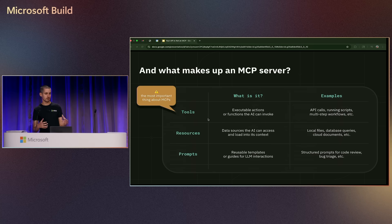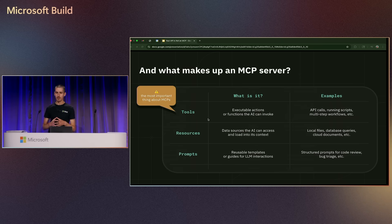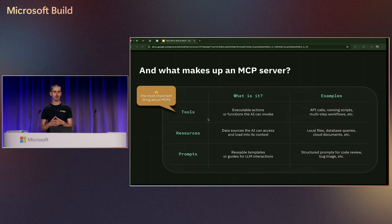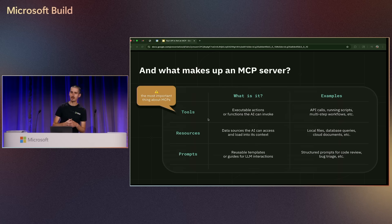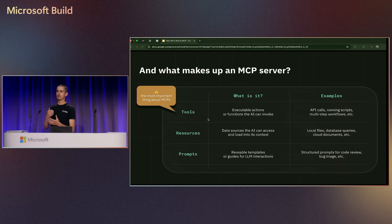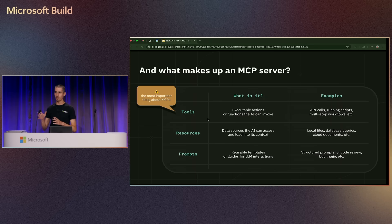The most important of these by far are tools. You can think of them as actions — things that the LLM might want to perform. An example would be if you're building an e-commerce website, a tool to buy an item. In our case, as a Postgres provider, an example tool would be to create a Postgres database — a request that comes in from the LLM.